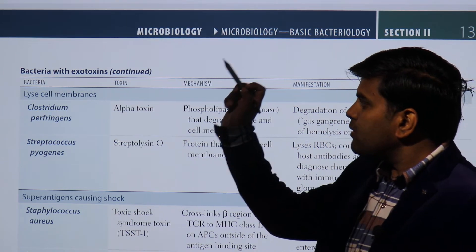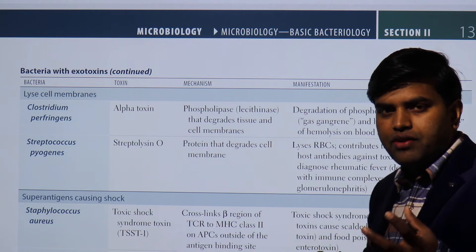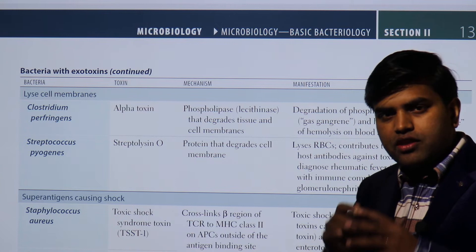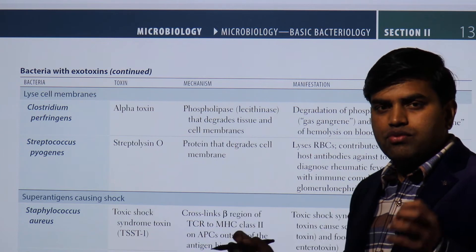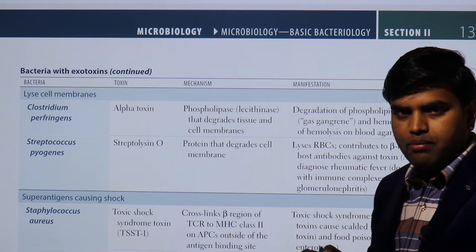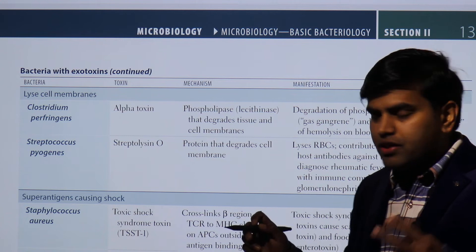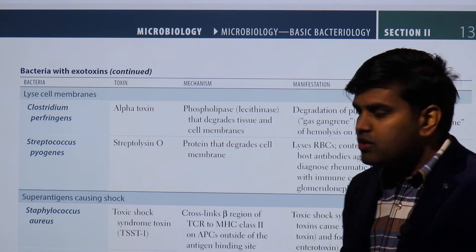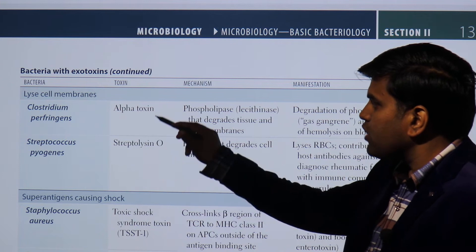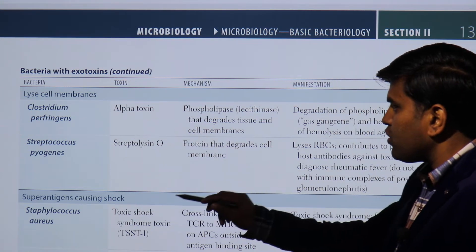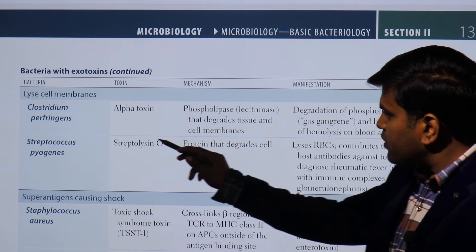Now we are continuing with the same topic of bacterial exotoxins, specifically discussing exotoxins that lyse the cell membrane. Certain exotoxins are released by bacteria into the environment and they lyse the cell membrane of cells like RBCs that come into contact with them. Two bacteria produce these membrane-lysing toxins: Clostridium perfringens and Streptococcus pyogenes.